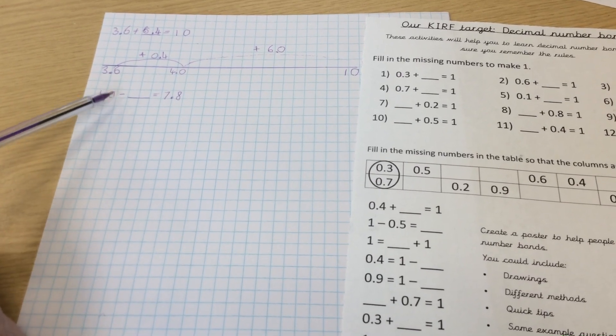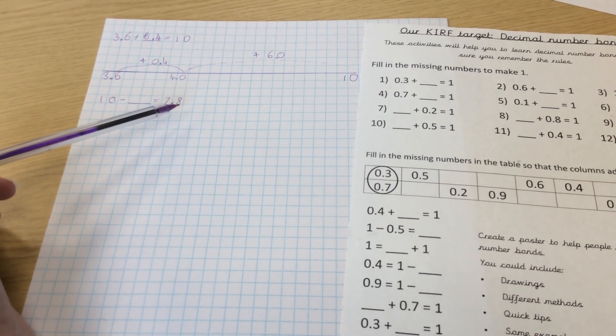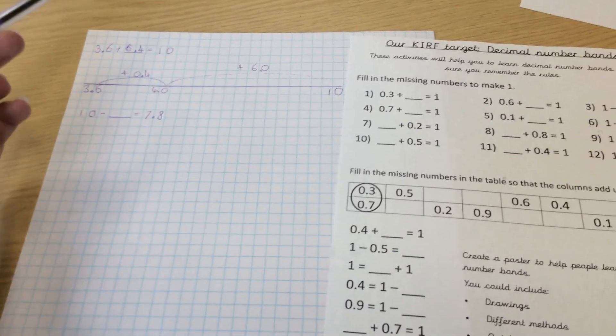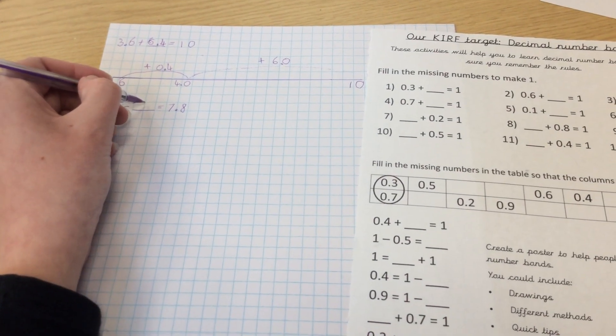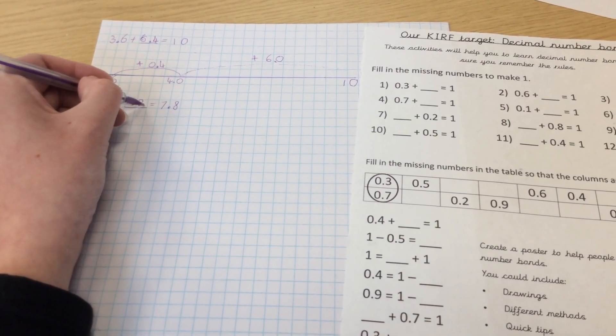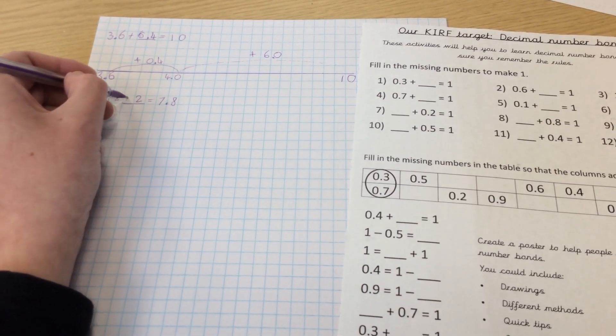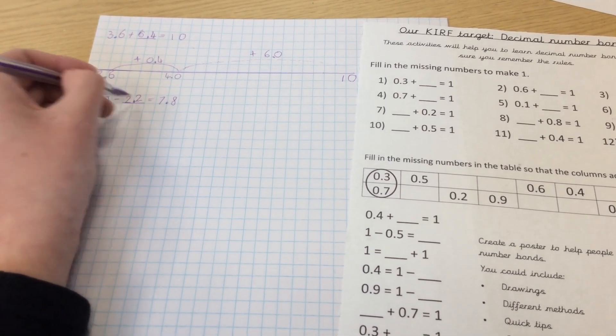So to get from 8 up to 10, I'm going to need 2, and to get from 7 up to 9, I'm also going to need 2. So my answer would be 2.2.